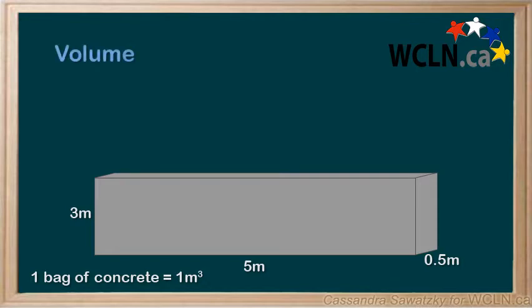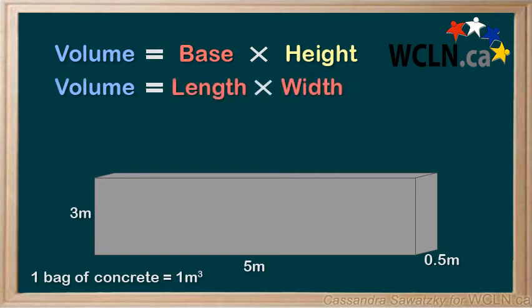To find the volume of the prism, we take the equation for the base and then multiply it by the height. In this case, the base is length times width, and then we multiply it by the height. This is the equation that you can use for the volume for a rectangular prism.